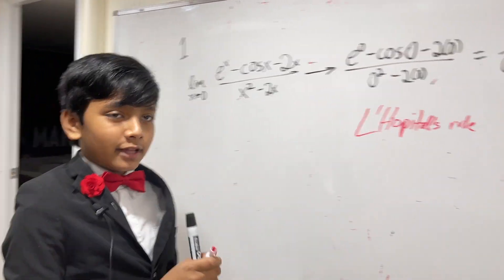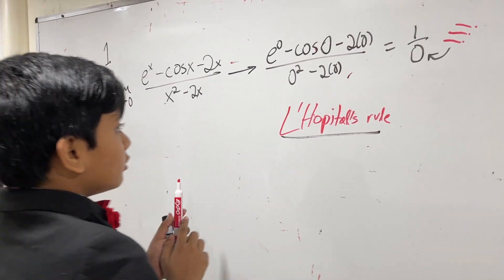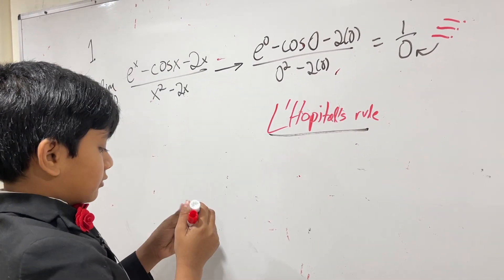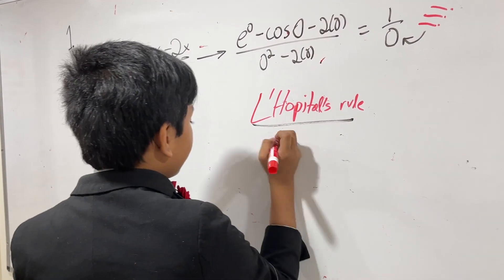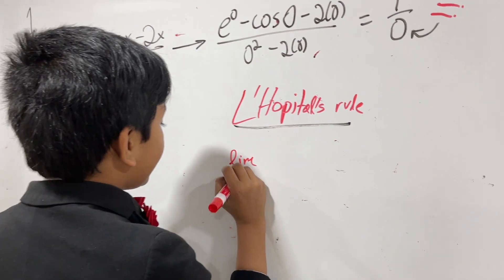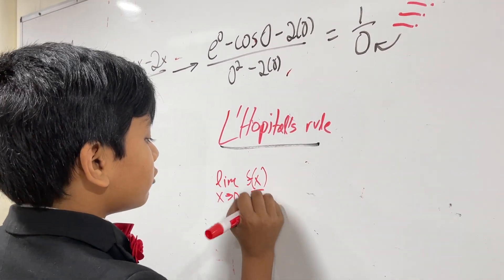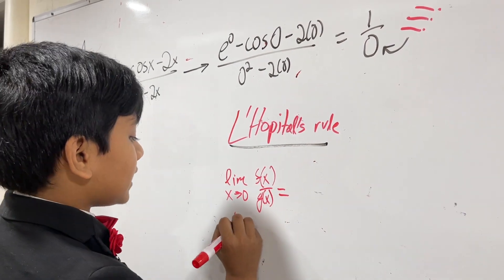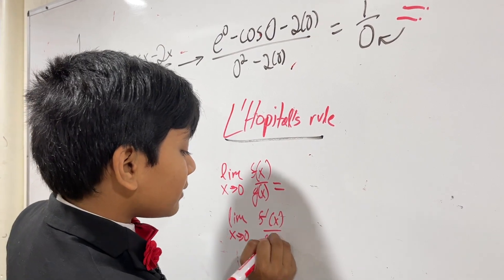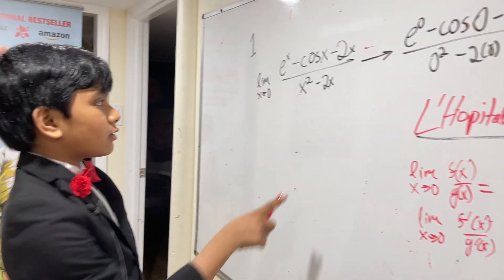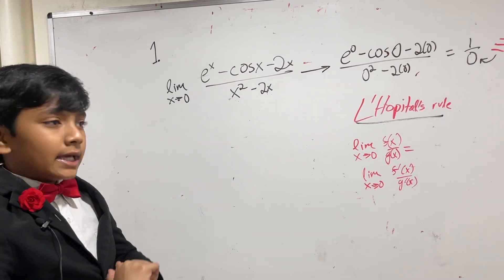Okay, so L'Hopital's rule is saying that if you take the limit as x or any variable approaches zero of f(x) over g(x), it's equivalent to the limit as x approaches zero of f'(x) over g'(x). So what that means is we can basically take the derivative of the top and the bottom and the limit will stay the same.